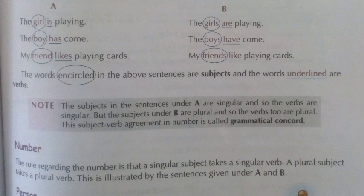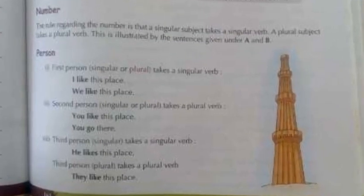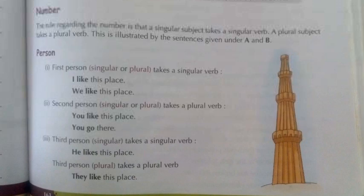As you can see, we choose the verb according to the subject. If the subject is singular, the verb is also singular; if the subject is plural, the verb is also plural. This is what we call subject-verb agreement, or grammatical concord. Going further, 'number' means how a subject will be singular or plural. The rule is: a singular subject takes a singular verb, and a plural subject takes a plural verb, as illustrated by sentences A and B.